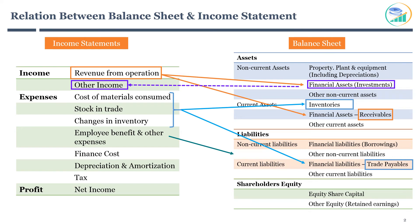The next line item is borrowings. A company borrows money from a bank as a loan to run daily operations or for expansion. This creates a long-term financial liability on the balance sheet as borrowings.